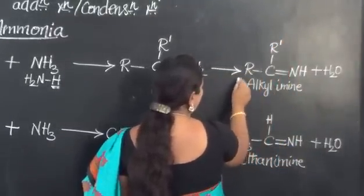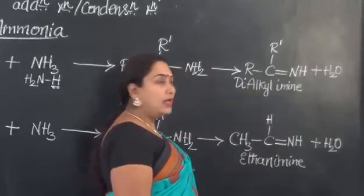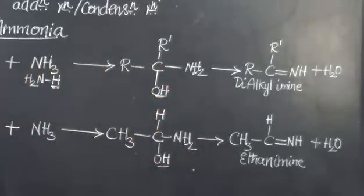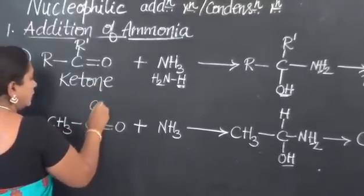Now, there will be two alkyl groups. So, we can also in the trivial nomenclature, we are calling this as dialkyl imine. Now, let us take up this with an example. Now, the example that we are going to consider for a ketone.